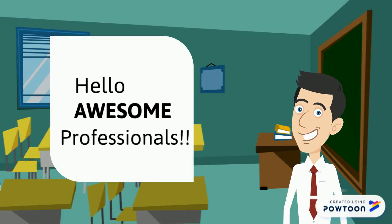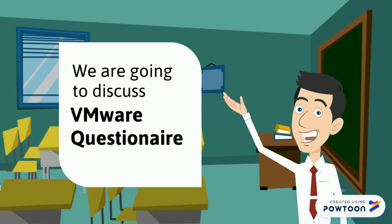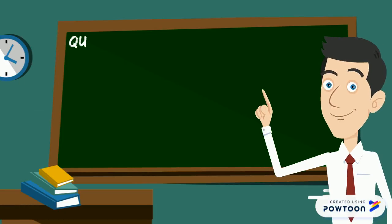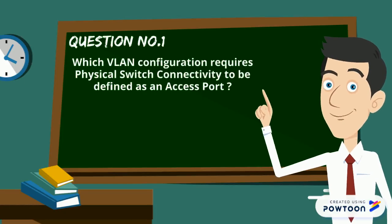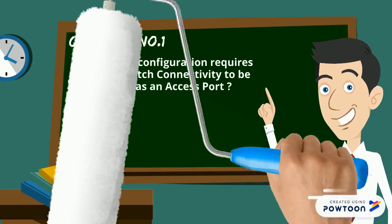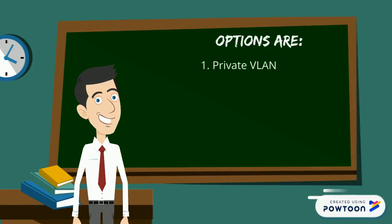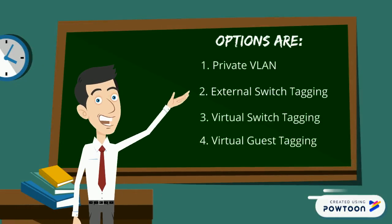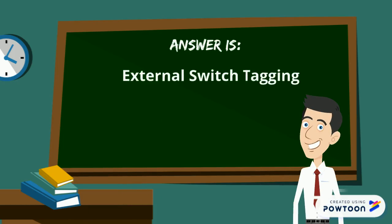Hello awesome professionals, we are going to discuss VMware questionnaire on this forum. Here goes question number one: which VLAN configuration requires physical switch connectivity to be defined as an access port? Your options are private VLAN, external switch tagging, virtual switch tagging, and virtual guest tagging. The answer is external switch tagging.